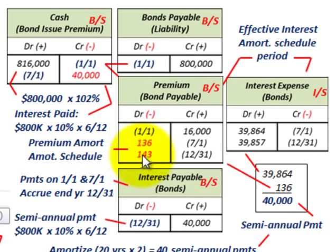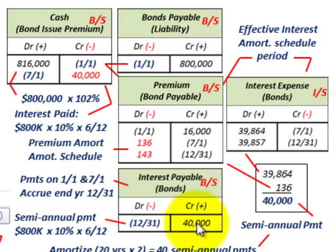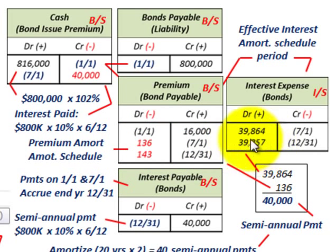For the second period, we amortize $143 of premium and recognize interest expense of $39,857. So the entry is: credit interest payable $40,000, debit bond premium amortization $143, and debit interest expense $39,857 — these balance with the $40,000 credit on the payable.